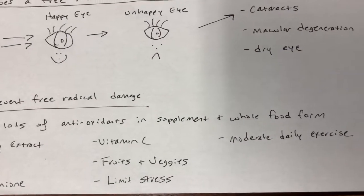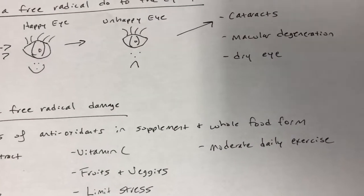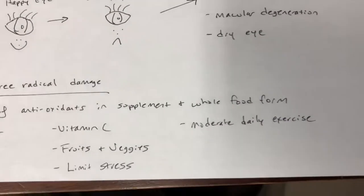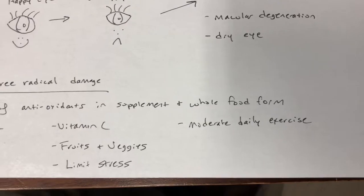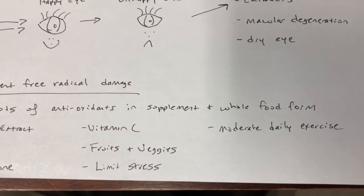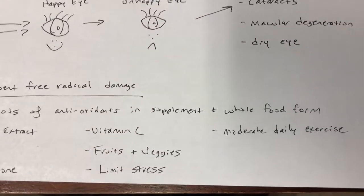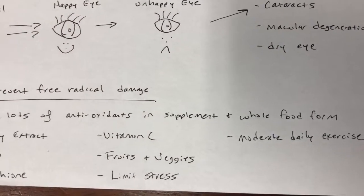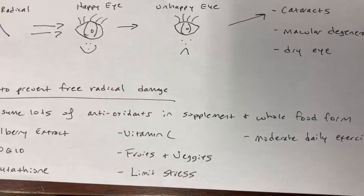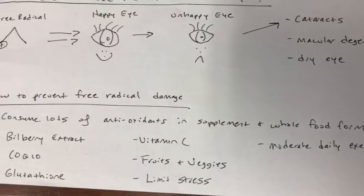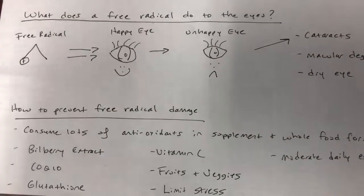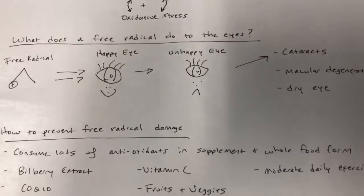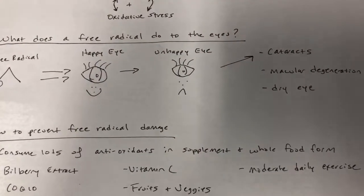Some of these things are supplements that you can take — bilberry extract is in a lot of eye supplements — and obviously eating nice healthy fruits and veggies goes a long way for your eyes. Hopefully this explains things a little bit. As I mentioned, this applies to your eyes but also to your whole body too. If you have any questions about this, feel free to send me a message — I'll be glad to answer it. Thanks for watching.